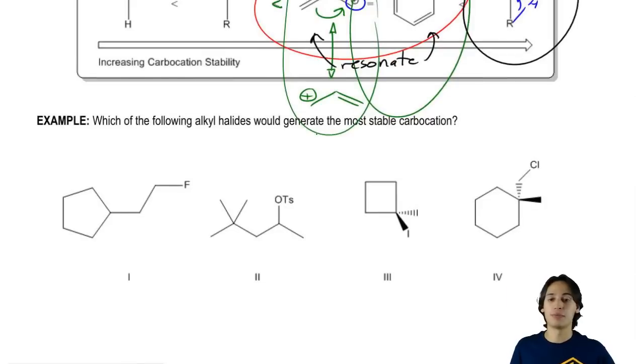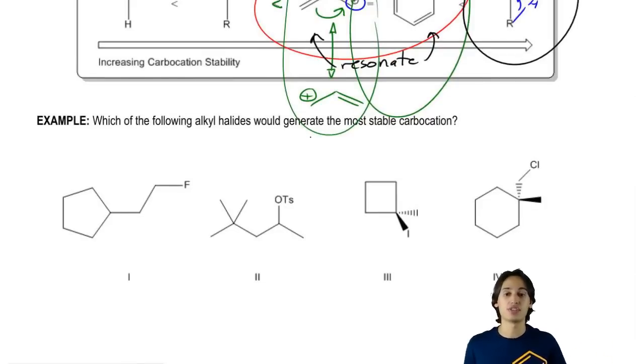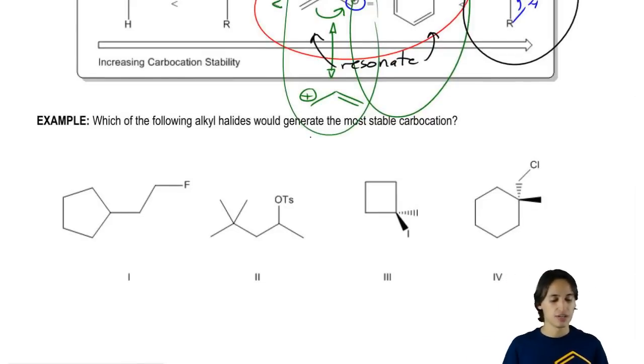So now I want to do this example and I want you guys to think about this for a second and say which of the following alkyl halides would generate the most stable carbocation. Now, I am kind of asking you guys to think about an extra step so I'm just going to tell you what that extra step is.